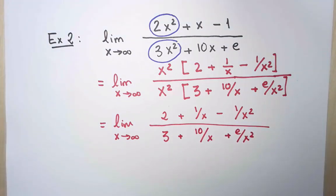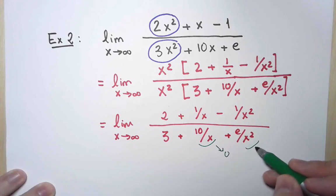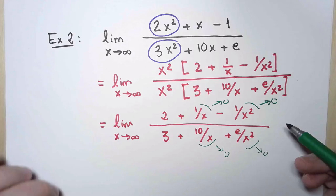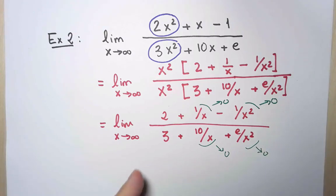And now I am left with a bunch of terms that, as x approaches infinity, all go to 0. So they don't matter for the limit, and the limit ends up being simply 2 over 3.